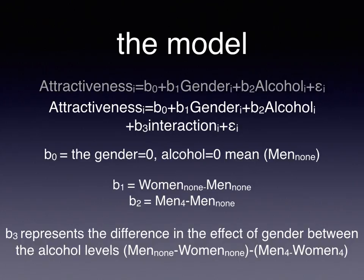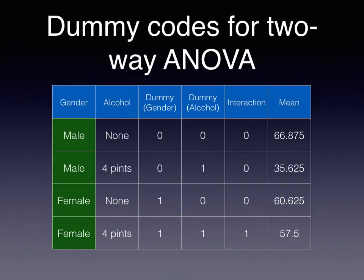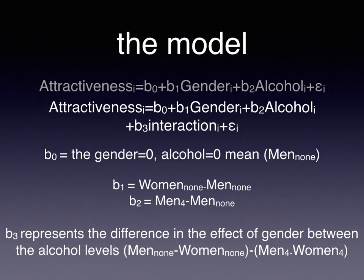There's only one group out of the four that has zero for B1, B2, and B3 — and if we go back to the table, we'll find that's men who had no alcohol. So B-sub-zero should be equal to the best predictor for men who had nothing to drink, with a gender code of zero and an alcohol code of zero and no interaction term. B-sub-zero is therefore equal to the mean of the men who drank no alcohol.